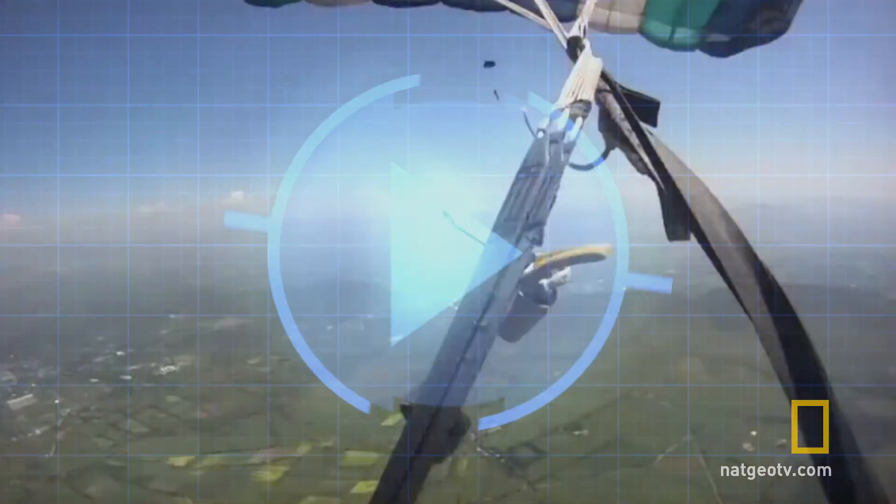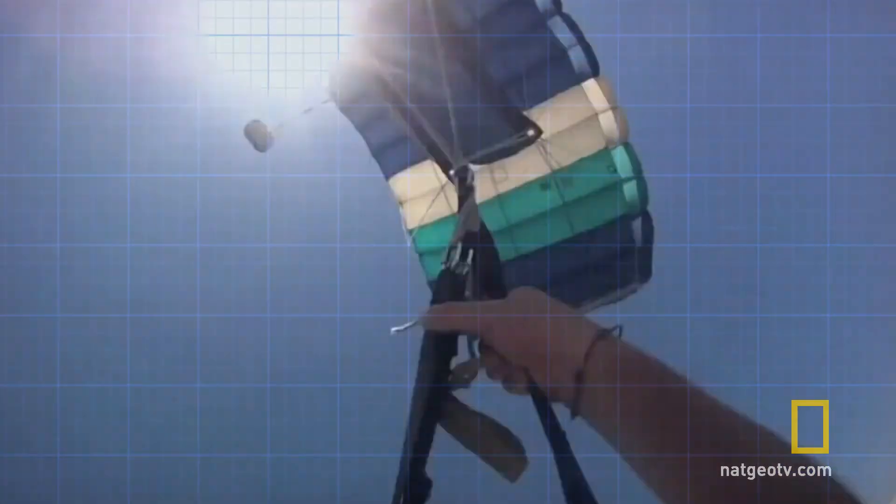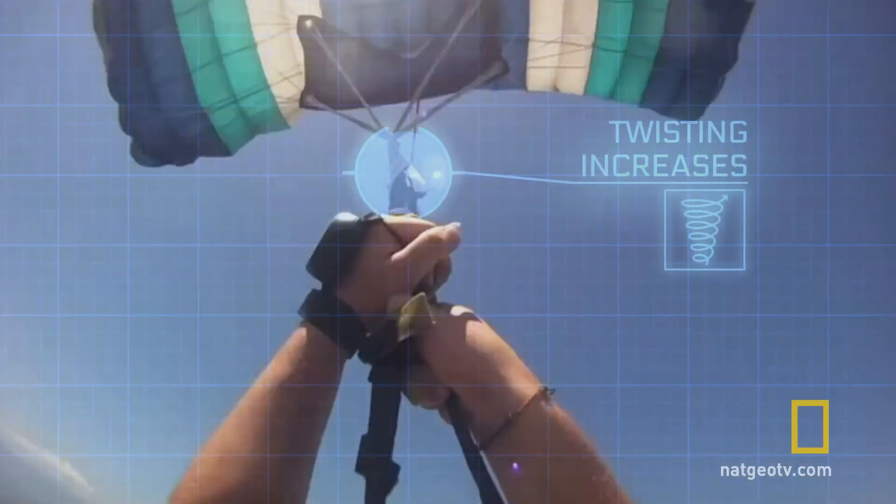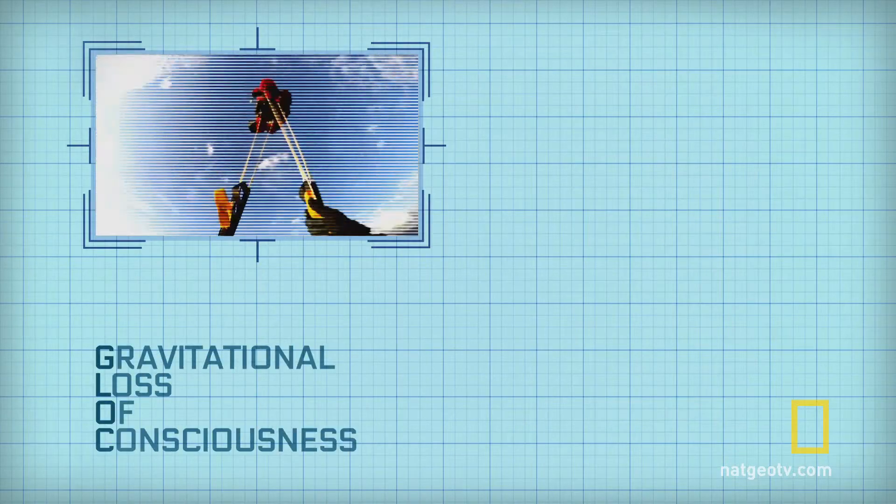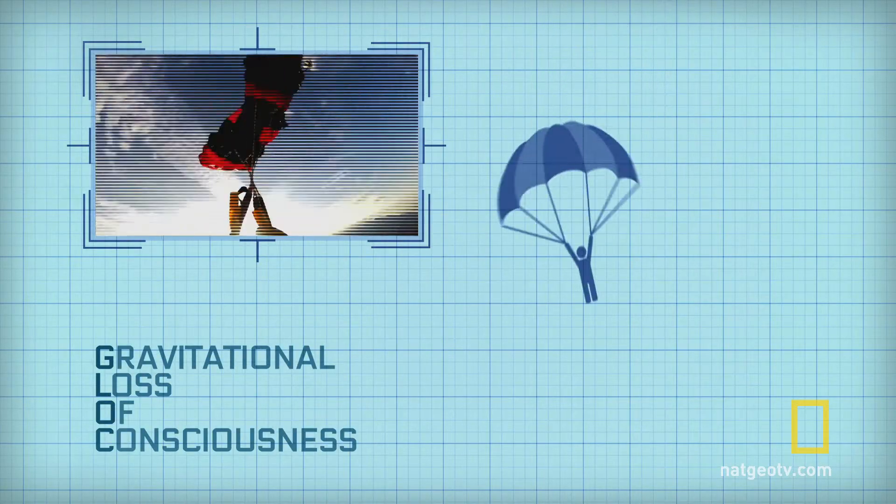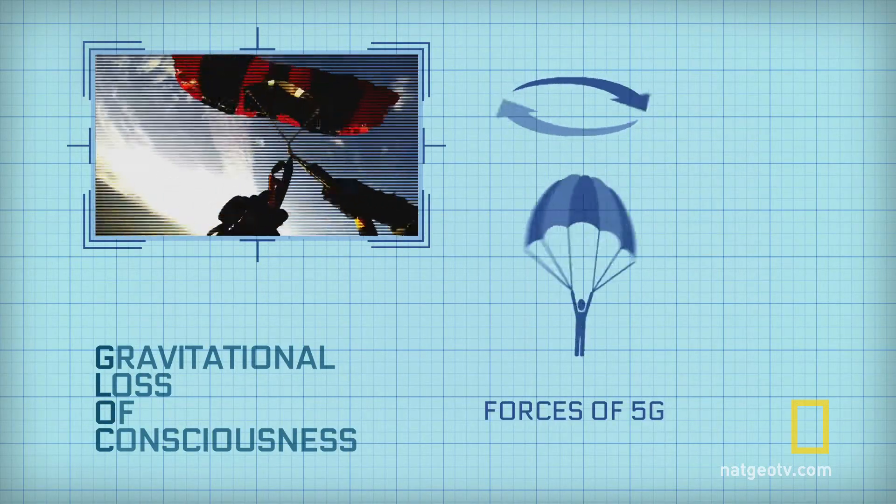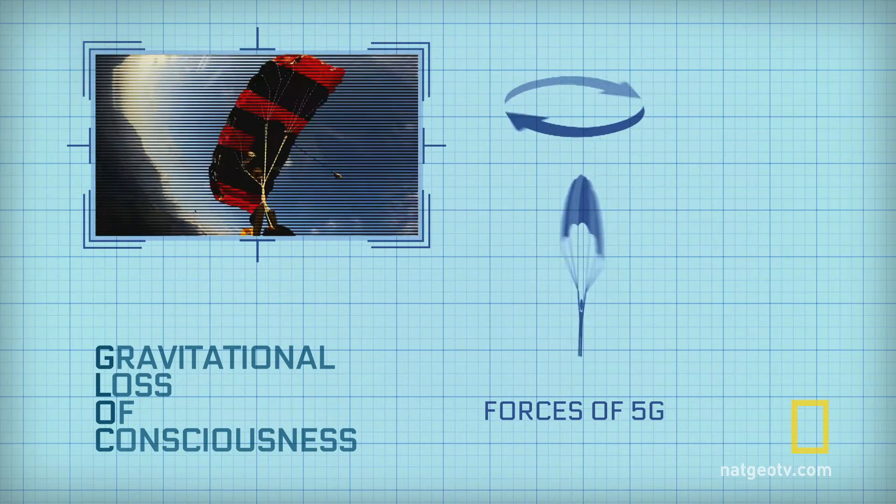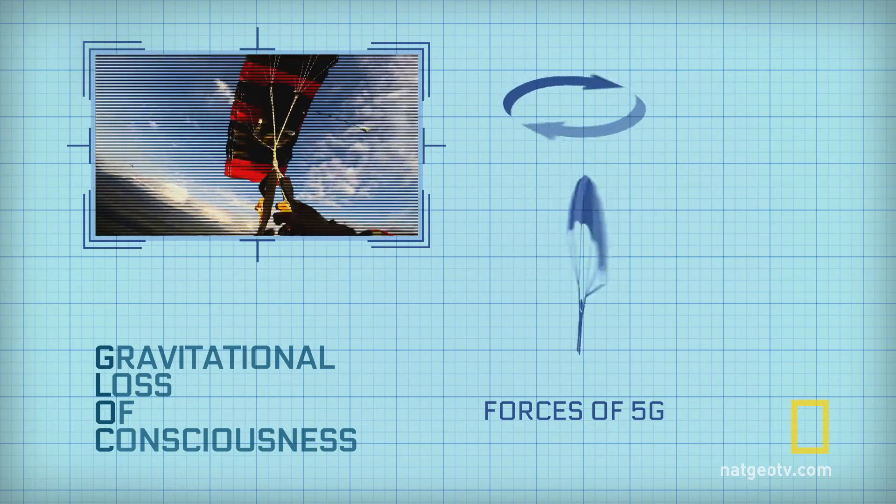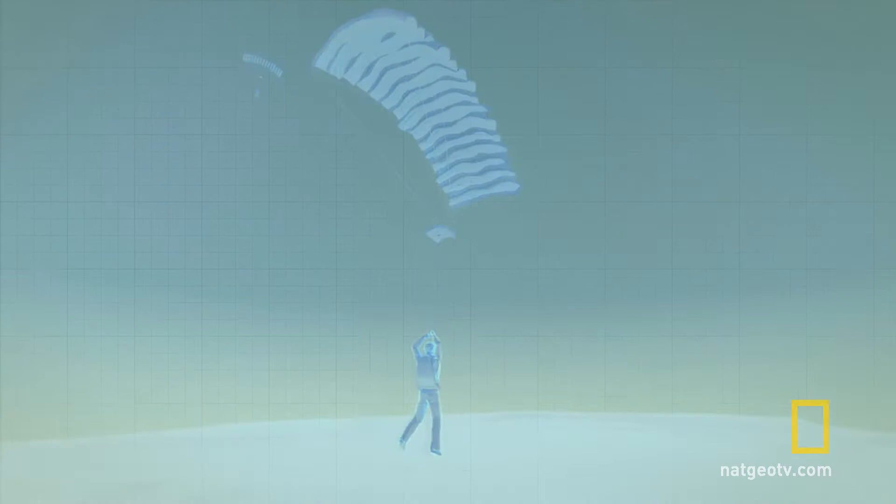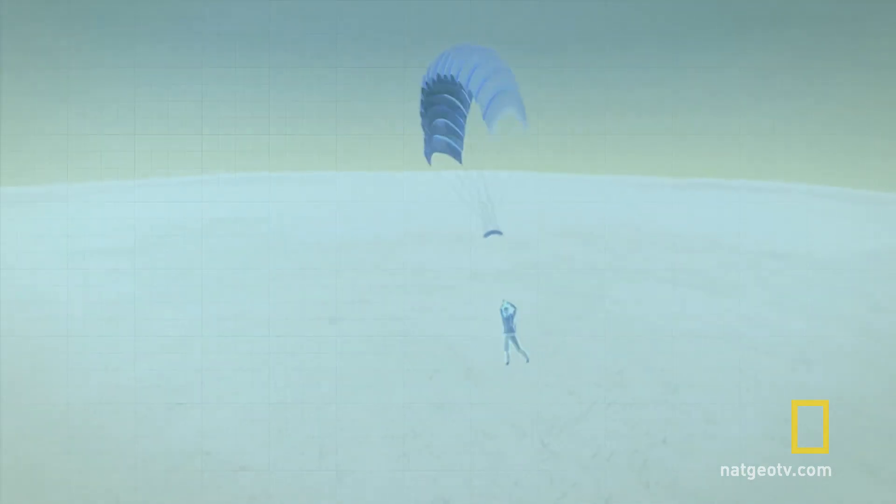A spinning parachutist could experience G-lock—gravitational loss of consciousness. A person can lose consciousness at forces of 5G and above. If the parachutist was to blackout on the descent, they would lose control of their jump, which could end in a catastrophic landing.